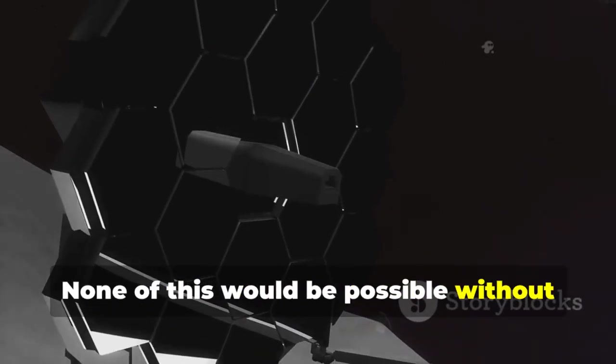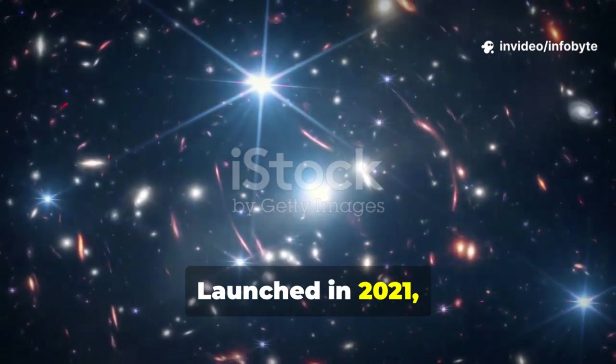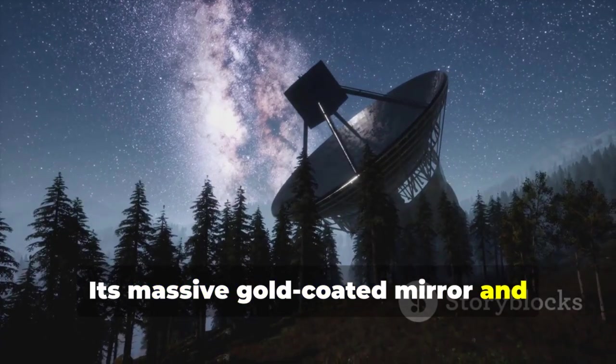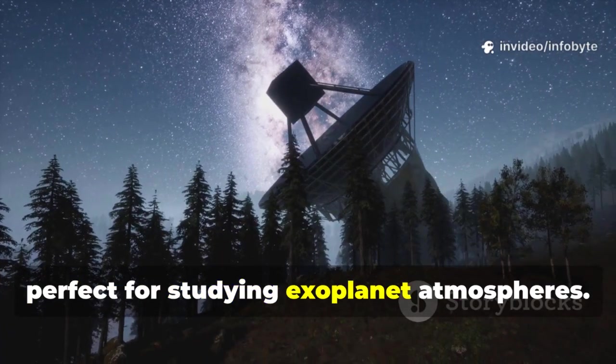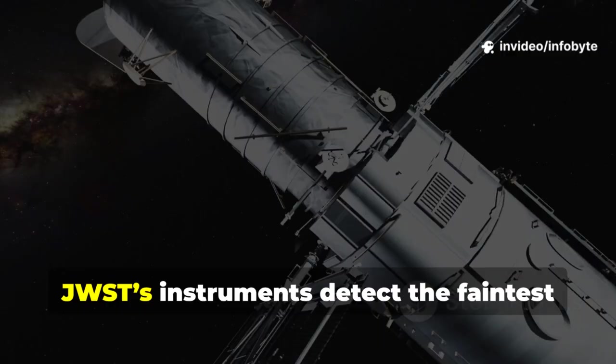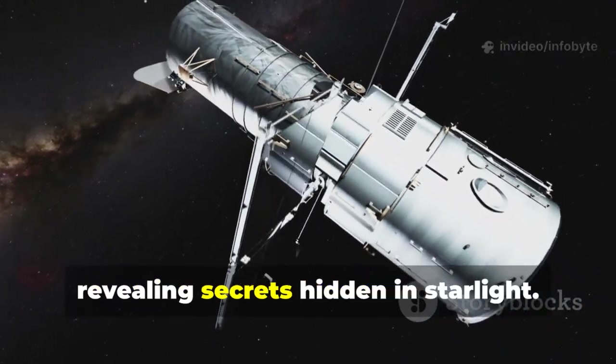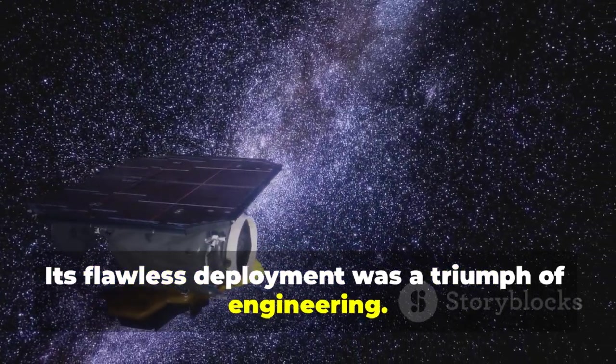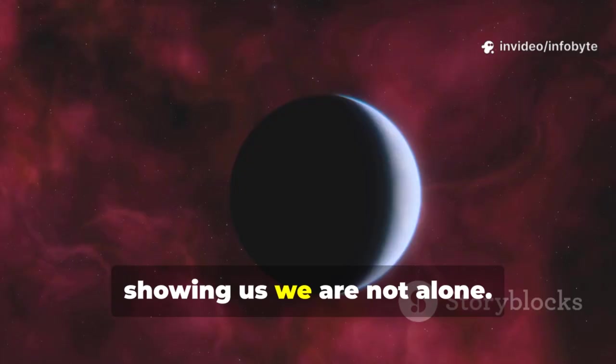None of this would be possible without the James Webb Space Telescope. Launched in 2021, JWST is the most powerful space observatory ever built. Its massive, gold-coated mirror and position at the L2 point allow it to see the universe in infrared, perfect for studying exoplanet atmospheres. JWST's instruments detect the faintest chemical signatures, revealing secrets hidden in starlight. Its flawless deployment was a triumph of engineering. Today, JWST has delivered on its promise, showing us we are not alone.